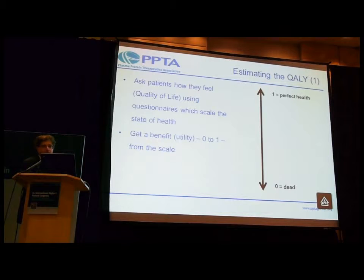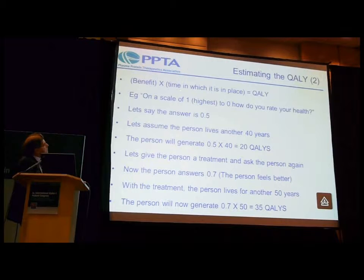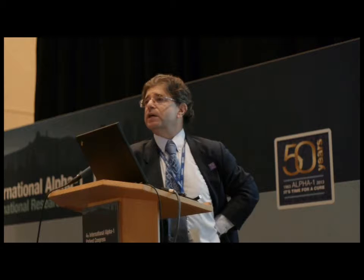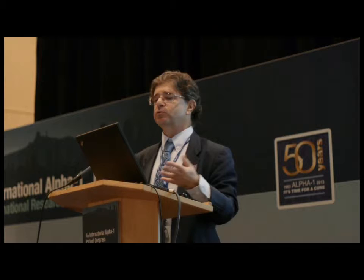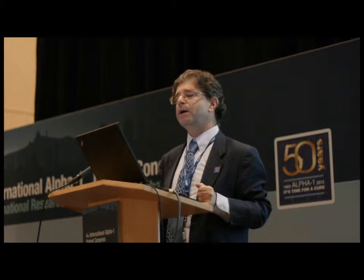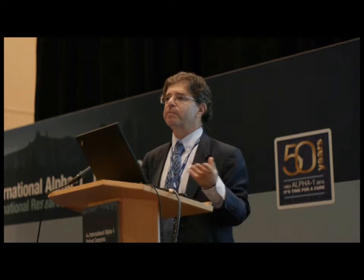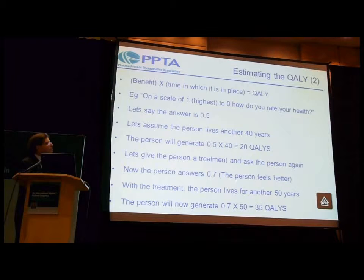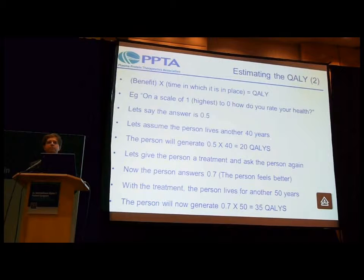The QALY is calculated by benefit multiplied by the time in which it is placed. Let's say I come to somebody in your community and ask, on a scale of one to zero, how do you rate your health? A person with alpha-1 might say: I rate my health about 0.5 — 50% of what it should be. And let's assume that based on knowledge of the disease, the person will live for another 40 years. Then to calculate how many QALYs: it's 0.5 times 40 years — so this person has 20 QALYs to look forward to.